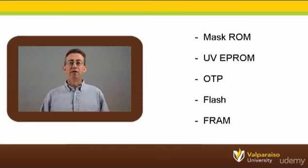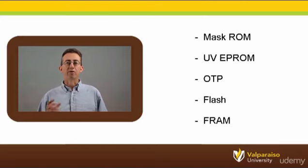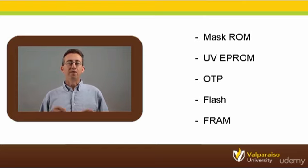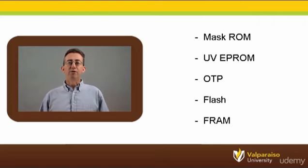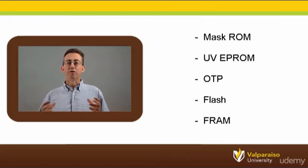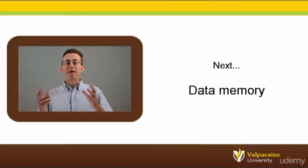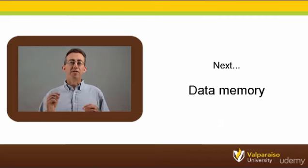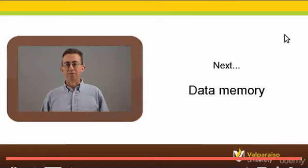In summary, there are a number of different options for program memories in microcontrollers today. While flash memories replaced mask ROM, EPROM, and OTP memories in the 1990s, FRAM shows significant promise to become the mainstay program memory technology for generations of microcontrollers to come. Up next, we'll look at the data memory function block that is inside microcontrollers.